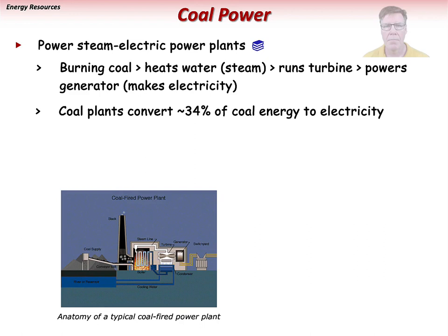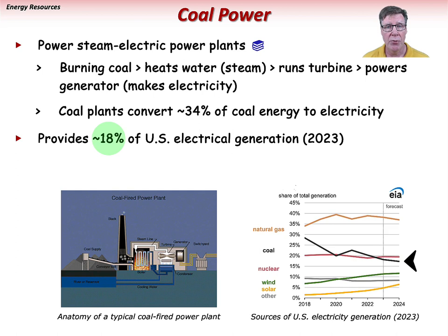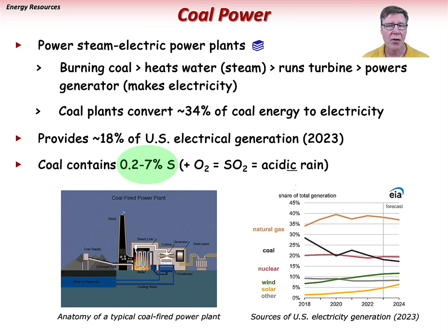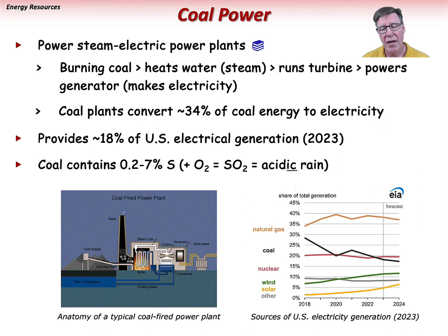Coal contains 0.2 to around 7% sulfur, so when burned, the sulfur combines with oxygen to form sulfur dioxide, and then with water to make a dilute hydrochloric acid — a major source of acid rain in certain industrial regions for a long time. Various environmental mitigation efforts have greatly reduced this problem. Even so, the construction and operation of coal-fired power plants are currently mired in political controversy. Coal provides almost one-fifth of U.S. electricity, and shutting down all coal power plants is simply not a realistic option, especially when there are no consistently reliable alternatives.